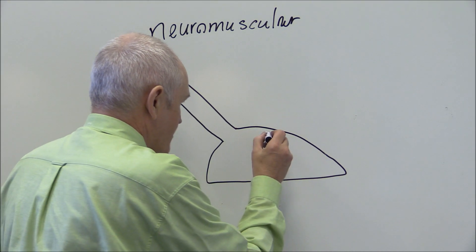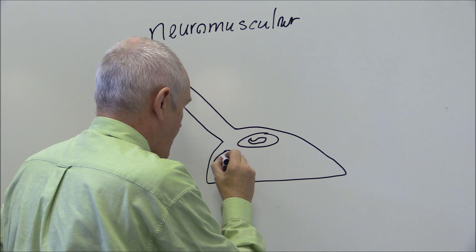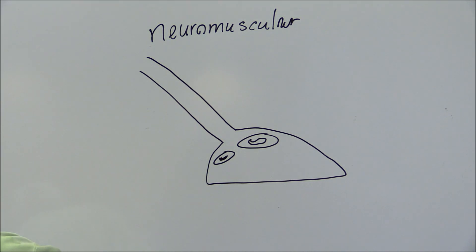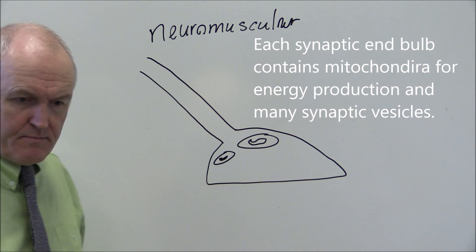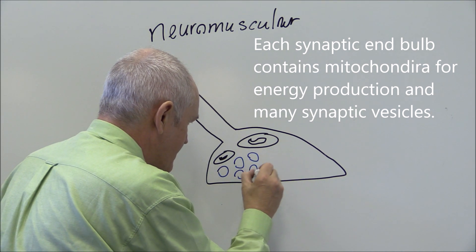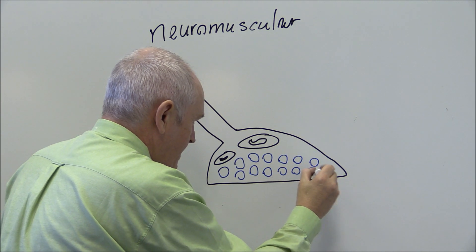There's going to be some mitochondria in here to provide energy but what there's particularly going to be in the motor neuron between the motor neuron and the muscle is there's going to be vesicles of this chemical transmitter.